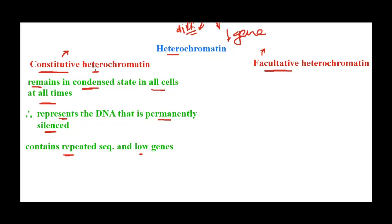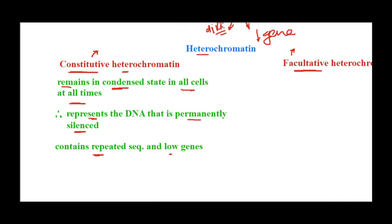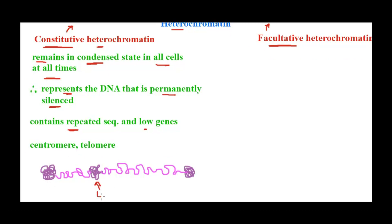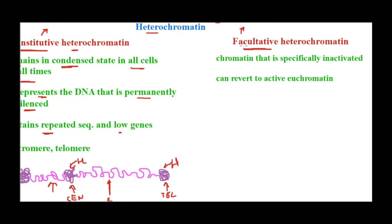Constitutive heterochromatin is concentrated in specific regions of the chromosome that we know well: the centromere and telomere. So the centromere and telomere regions are where we find constitutive heterochromatin. What you see in the lighter, less condensed form in the chromosome diagram is euchromatin, while the darker regions at centromere and telomere represent constitutive heterochromatin — always silenced, permanently transcriptionally inactive.